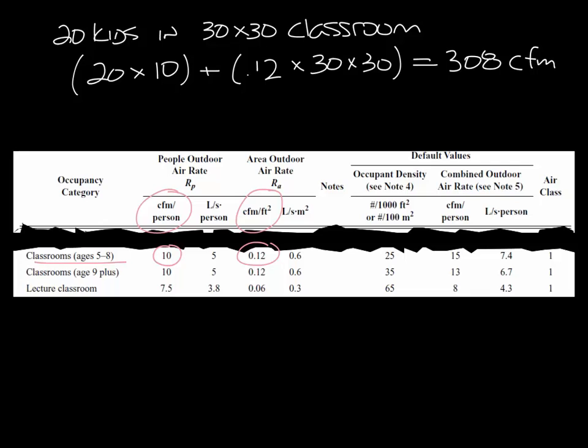So now what do you do if you don't know how many people are going to be in the space? The table also gives you default values that you can use. So over here you see the default value for occupant density is 25 people per thousand square feet, and then you can use that to calculate the airflow you need.